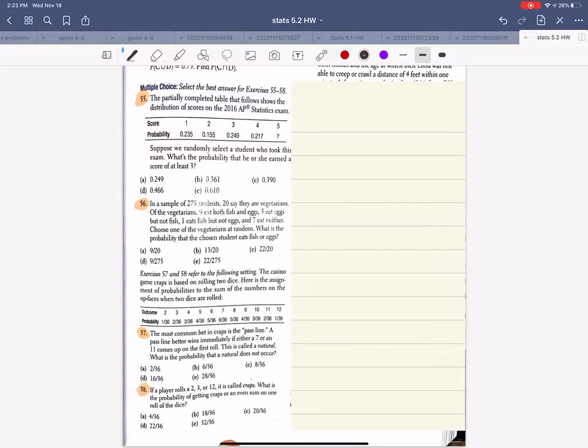It says the partially completed table shows a distribution of AP stats exams. Okay, so we know in our notes that in a probability model they have to add up to 1.